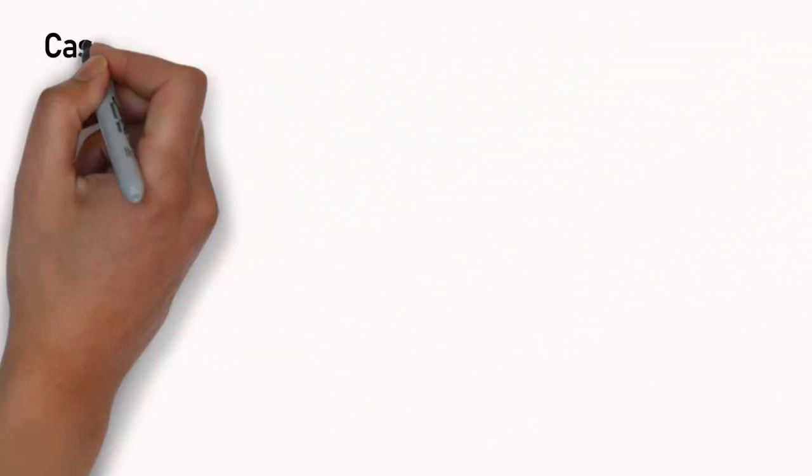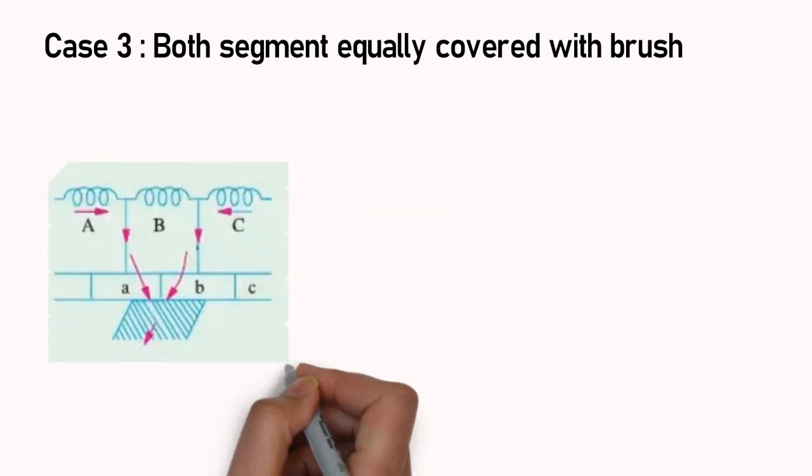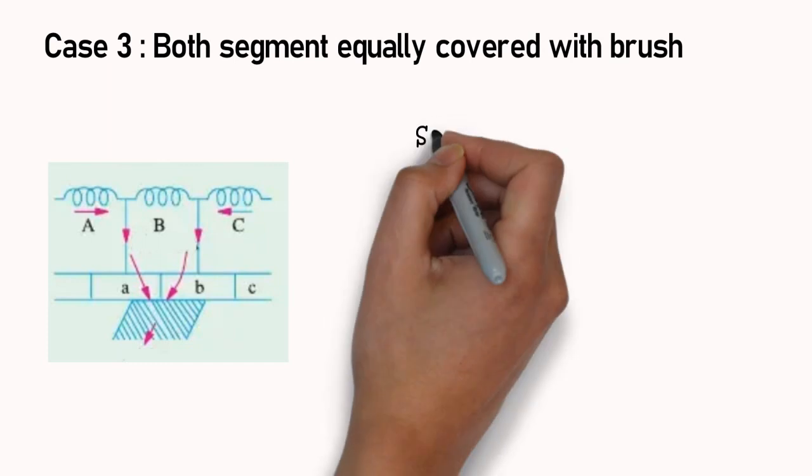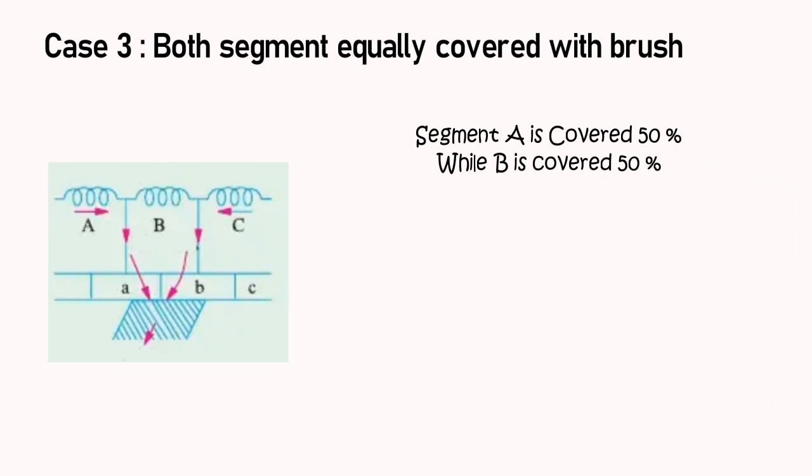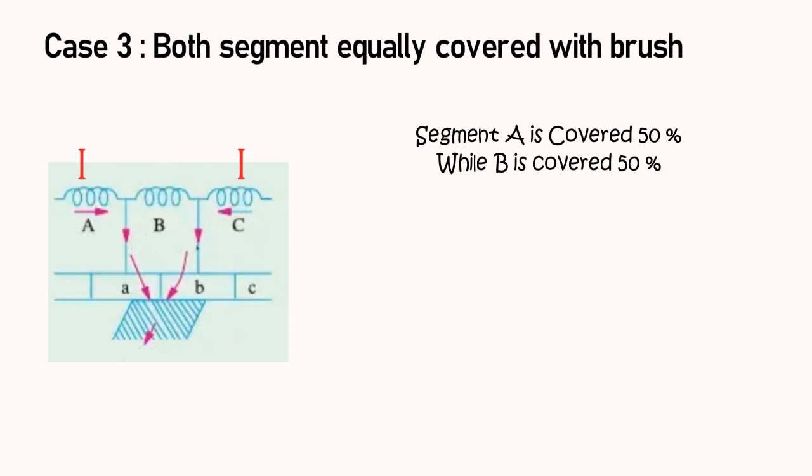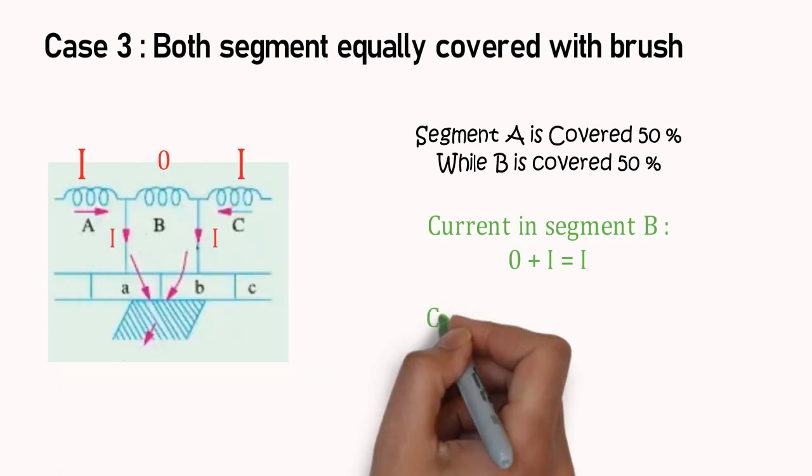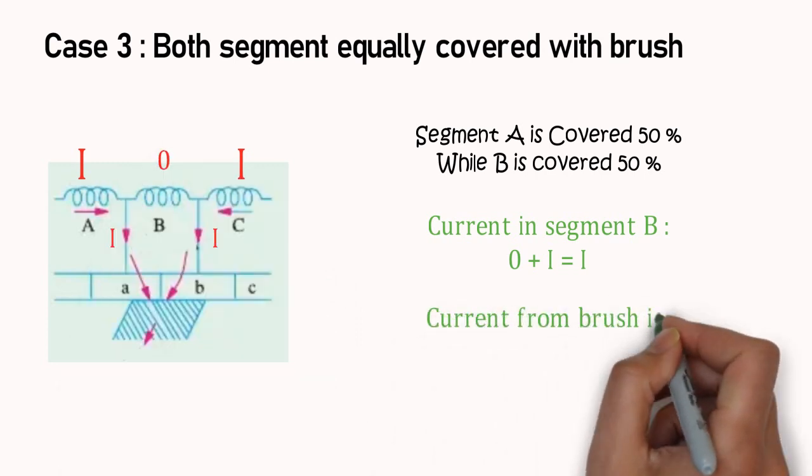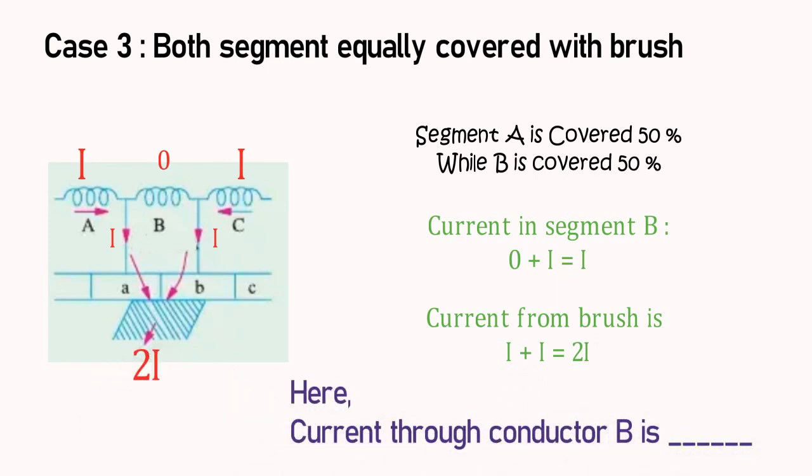In this case, contribution of both commutator segments are equal. So, same amount of current will pass through commutator segment A and B. Again, coil A and coil C is having same current that is I. As both segments equally connected with brush, no current is passing from coil B, and full current 2I is passing through brush.